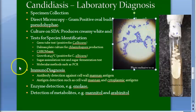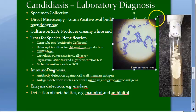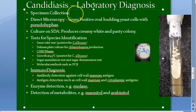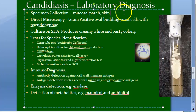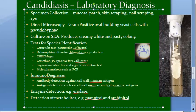Depending on the site of infection, different specimens will be collected. For specimen collection you can collect mucosal patch, nail scraping, sputum, blood, urine, vaginal discharge, skin scraping, and nail scrapings — essentially anything, since Candida can infect almost everything.